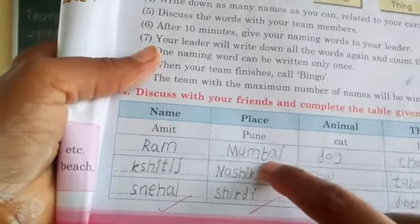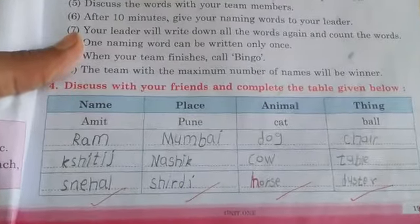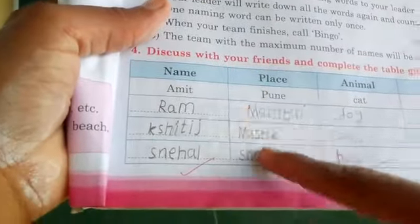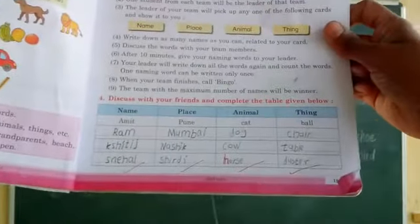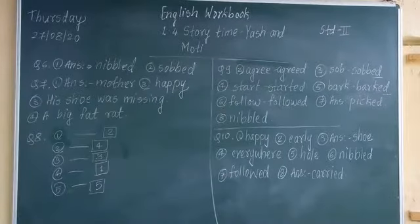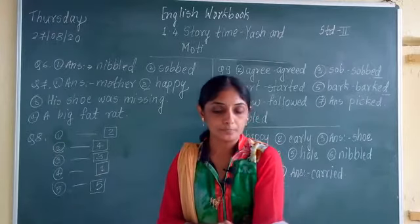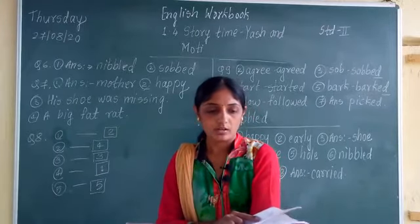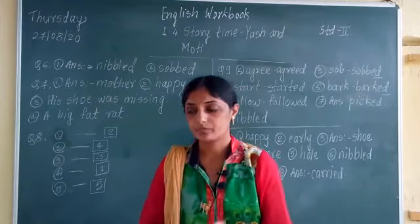For places, Mumbai is given, Nasik is given, Shirdi is given — you can write more like Rahata, Nandurki, Korale, or your own place name. Then names of people. Please complete page number 16, page number 17, and page number 19. This is your homework — complete the English workbook pages 16, 17, and 19. The remaining part of the workbook we will take up in tomorrow's period. Thank you.